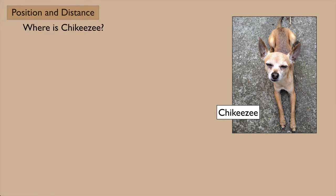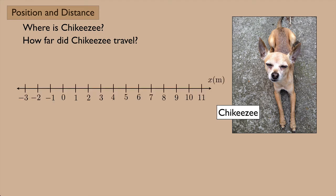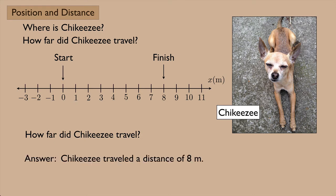So we answered where is Chiquisi. Another question we might want to ask for this very active Chihuahua is how far did Chiquisi travel? Here's our axis again. Let's suppose that Chiquisi started here at zero and finished over here at eight. In this case, how far did Chiquisi travel? We would say that Chiquisi traveled a distance of eight meters, because we would count starting from the zero right here all the way up to the finish, and when you count you see we have eight meters.